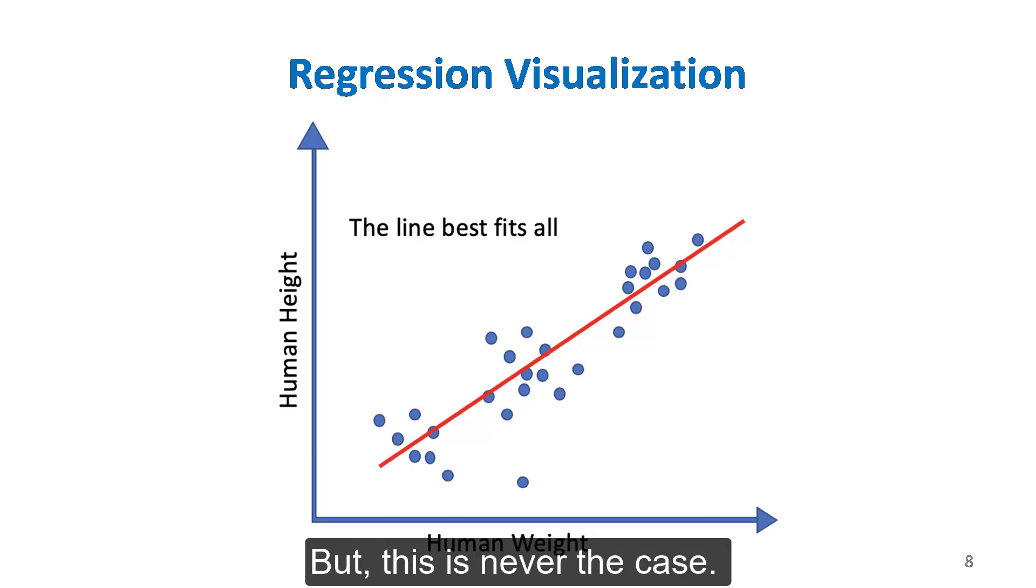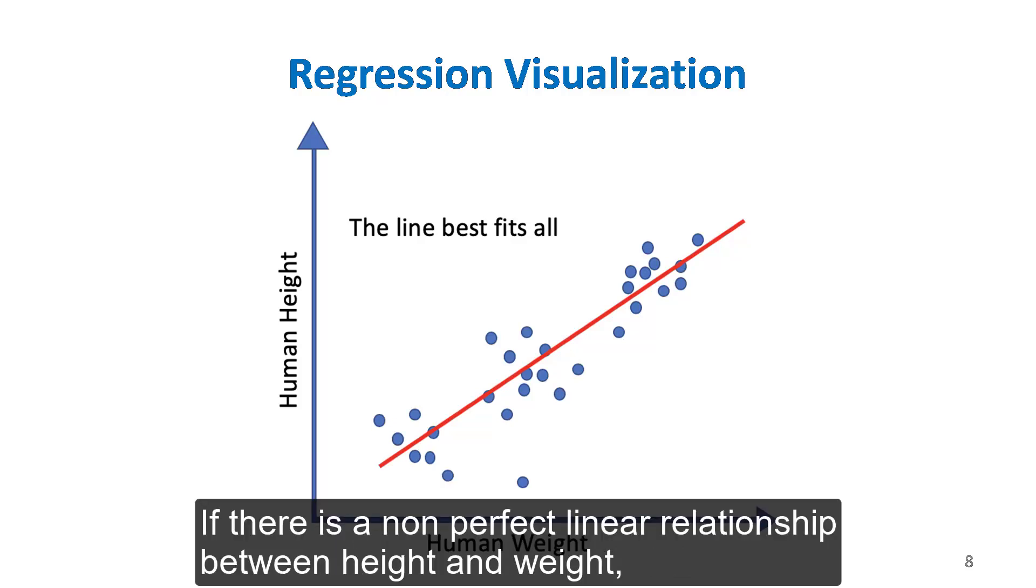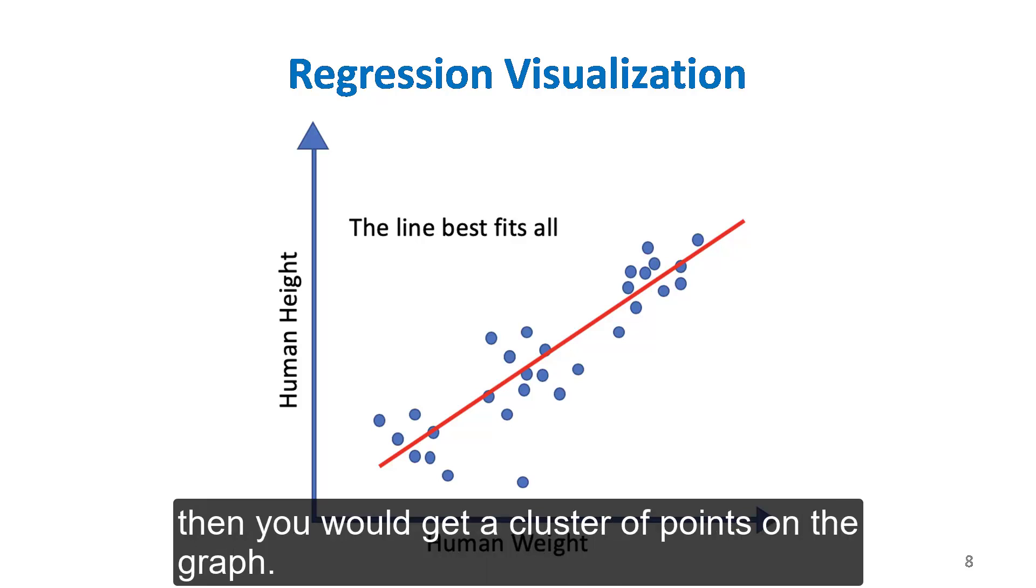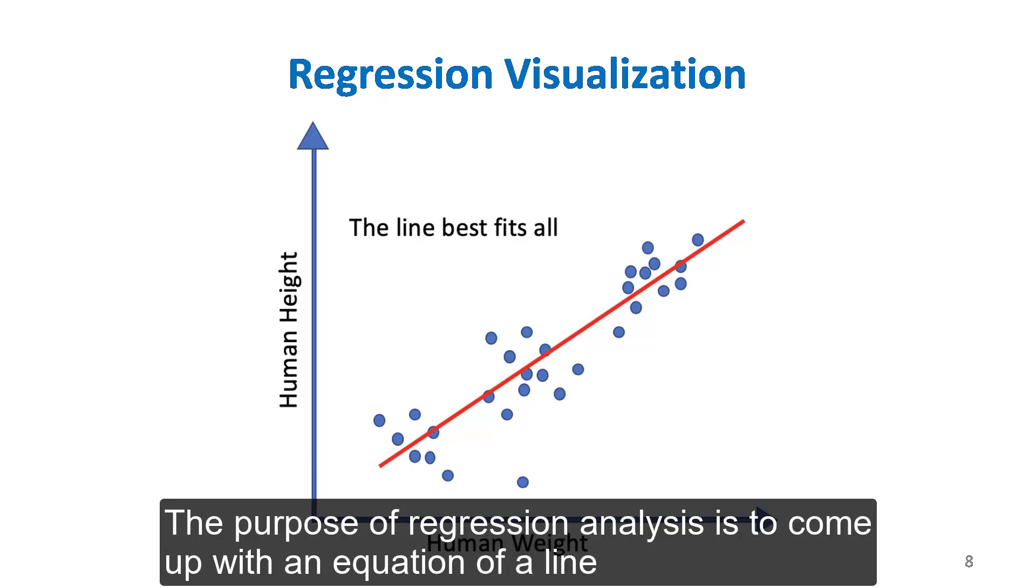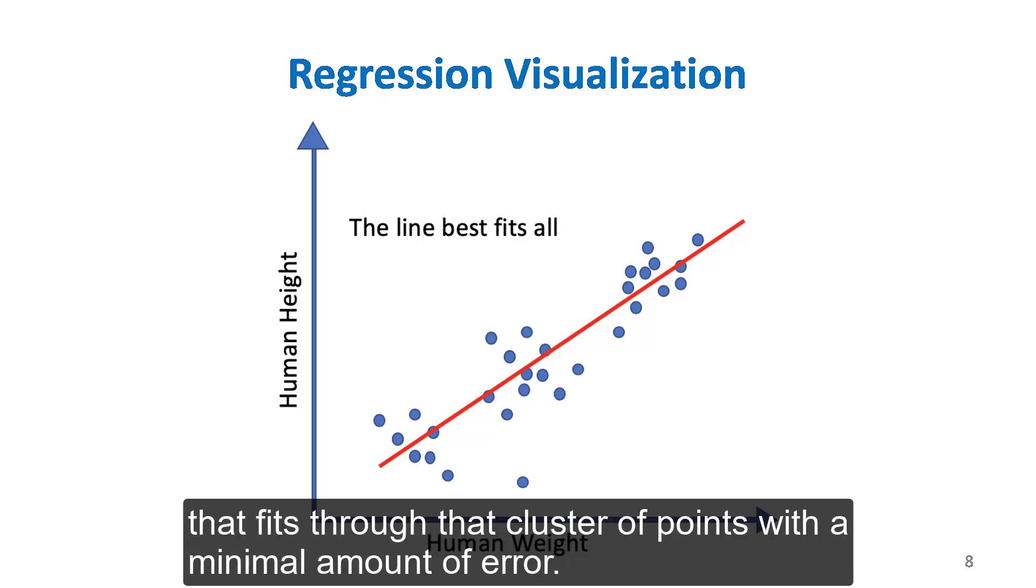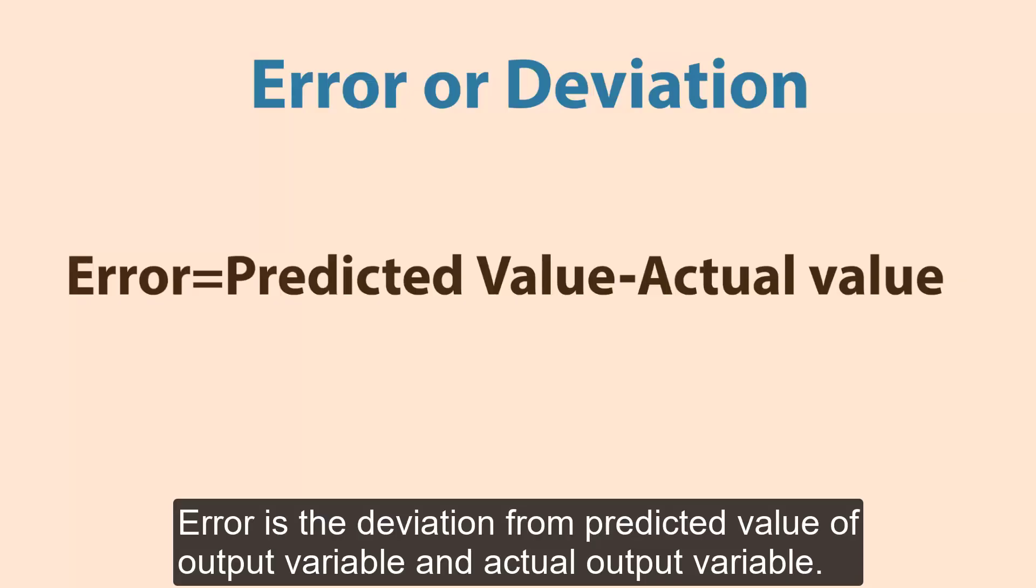But this is never the case. If there is a non-perfect linear relationship between height and weight, you would get a cluster of points on the graph. People who weigh more should generally be taller than those who weigh less. The purpose of regression analysis is to find an equation of a line that fits through that cluster of points with a minimal amount of error. Error is the deviation between the predicted value and the actual value of the output variable.